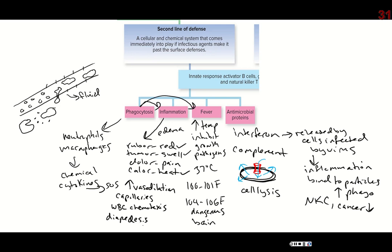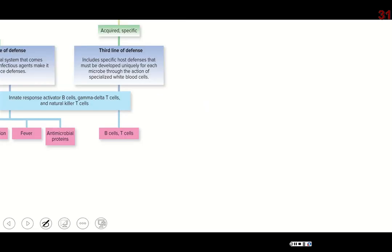Pain is simply from the fact that if there were nerve endings in that location that were damaged, they let you know there's an injury in that area. That covers everything for the second line of defense. All of this is happening at the same time, and while this is happening, the B and T cells are being activated — but that's a slower process. It takes a little bit longer. Let's look at our B and T cells — the third line of defense.